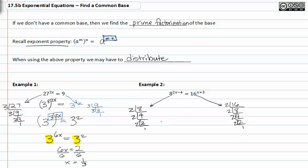So I can now see that I do have a common base, but my exponents will be slightly different. I can rewrite 8 as 2^3 raised to the (2x - 4). And on the right side of the equation, I can rewrite 16^(x+3) as 2^4 raised to the (x + 3).